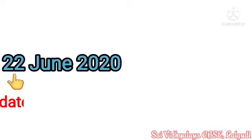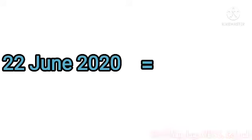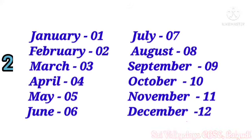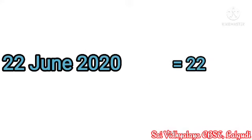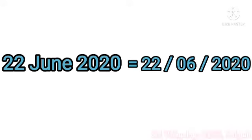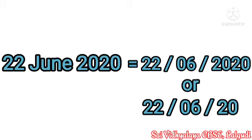Let me explain with one example: 22 June 2020. Here 22 is the date, June is the month, and 2020 is the year. The number corresponding to June is 06. So we write 22/06/2020. Or you can write it as 22/6/20.